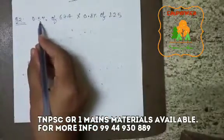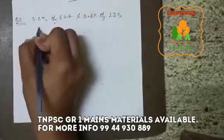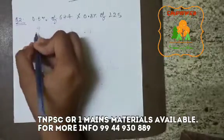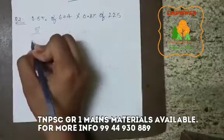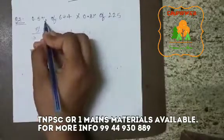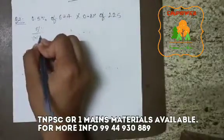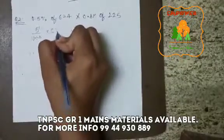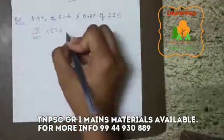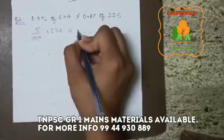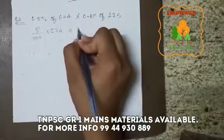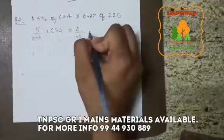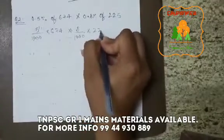We can write 0.5% as - can we write 0.5 as 5 by 10? And we have percent, now 100, so I can write it directly as 1000 into 674. Similarly, 8 by 1000 into 225.